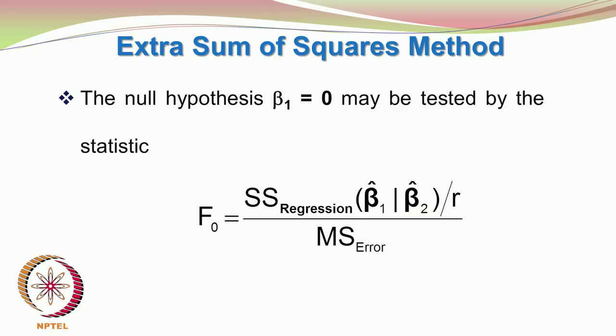Welcome back. In today's lecture, we will continue with regression analysis. We were discussing the extra sum of squares method, and we test the null hypothesis beta 1 equals 0 using the statistic: sum of squares of regression for beta hat 1 given beta hat 2 is already present in the model, divided by r degrees of freedom for beta hat 1, divided by the mean square error.